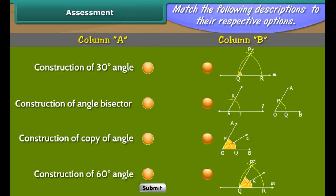Assessment. Match the following descriptions to their respective options. Summary. Let us summarise what we have learnt: construction of circles, construction of line segments, construction of a perpendicular to a line segment, construction of a perpendicular bisector of a line segment, construction of an angle bisector, and construction of angles.